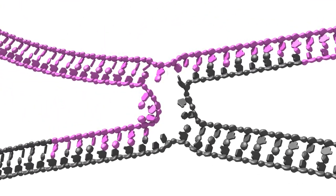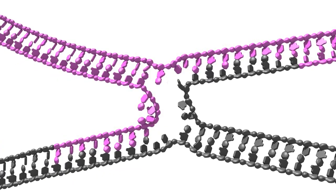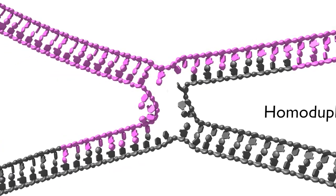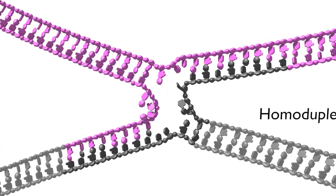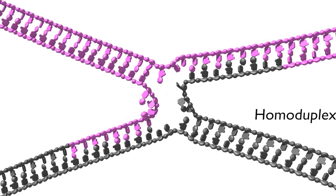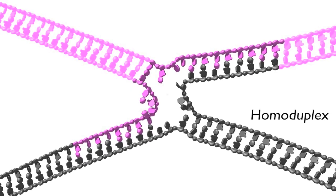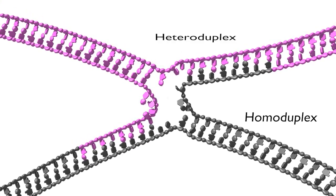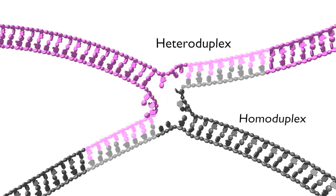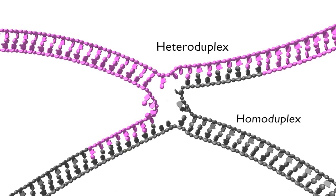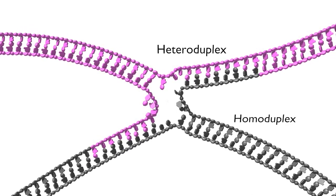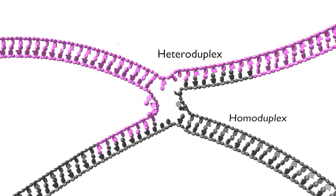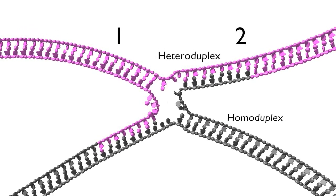Notice that both of the linked duplexes contain regions of homoduplex, where grey strand pairs with grey strand and pink strand pairs with pink strand, and heteroduplex, where grey strand pairs with pink strand. Also notice that the Holliday junction involves four DNA strands.